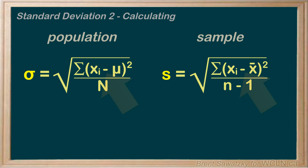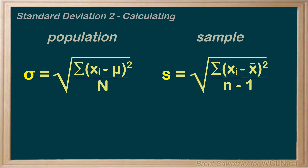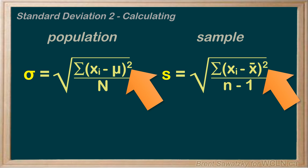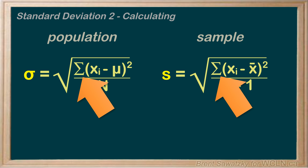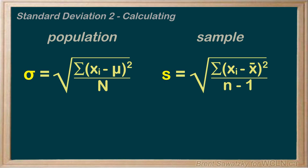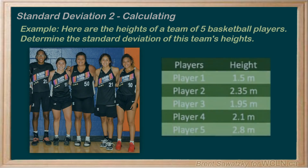In both cases, we are computing each data point minus the mean, and then squaring — same in both formulas. This symbol tells us to sum, or add them all up. It might look a tad complicated, but if we use a table to stay organized with our calculations, it's actually pretty easy to calculate the standard deviation for a small batch of data. Let's try it out on an example.